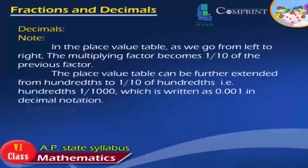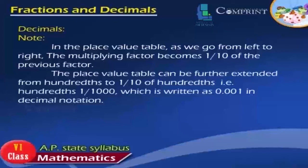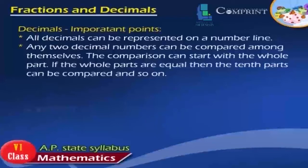In the place value table, as we go from left to right, the multiplying factor becomes 1 by 10 of the previous factor. The place value table can be further extended from hundreds to 1 by 10th of hundreds, and 1 by 1000, which is written as 0.001 in decimal notation. All decimals can be represented on a number line. Any two decimal numbers can be compared — the comparison starts with the whole part; if the whole parts are equal, then the tenth part can be compared, and so on.